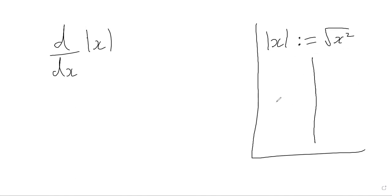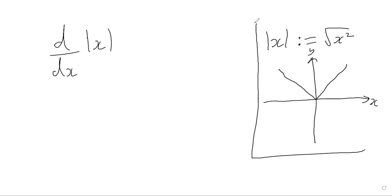And if we sketch a graph of this, with y and x axes, it looks something like this — obviously with straight lines. And this is just a graph of the modulus of x. Of course it's a function — it's a many-to-one function, so it is still a function.